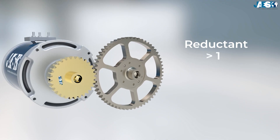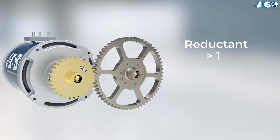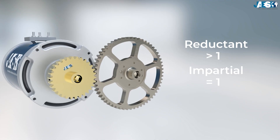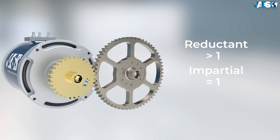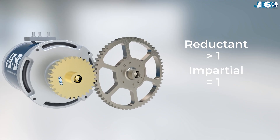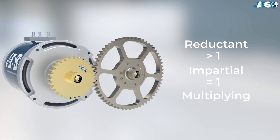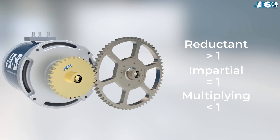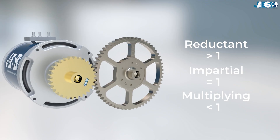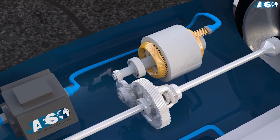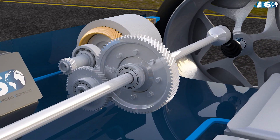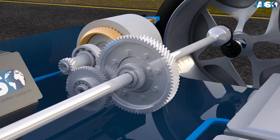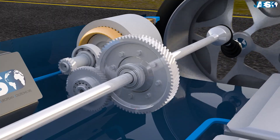Moreover, in the case that the driven gear rotates at the same speed as the drive gear, proceeding at a ratio equal to 1, the gear ratio is defined as impartial. To conclude, if the gear ratio is smaller than 1, the whole mechanism is defined as a multiplying drive with a multiplying ratio. In mechanics, the use of a reduction drive is more frequent than the use of multiplying drives, since motors are built to maintain a high rotation speed.